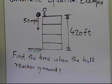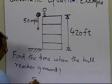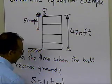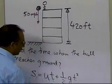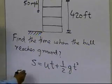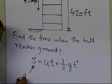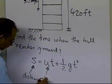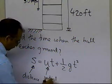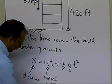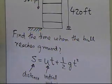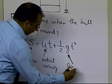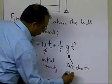We know that the formula which governs this particular physical model is s = ut + ½gt², where s is the distance, u is the initial velocity — which in our case is 50 miles per hour — and g is the acceleration due to gravity.